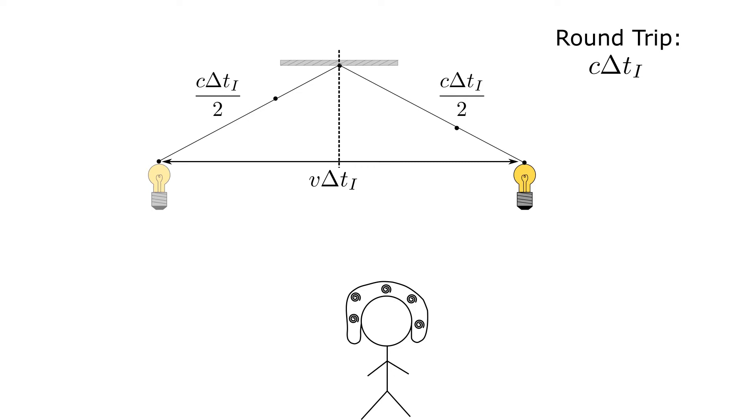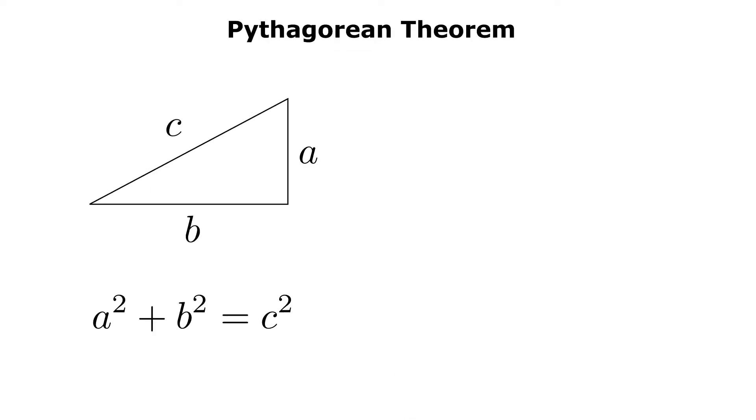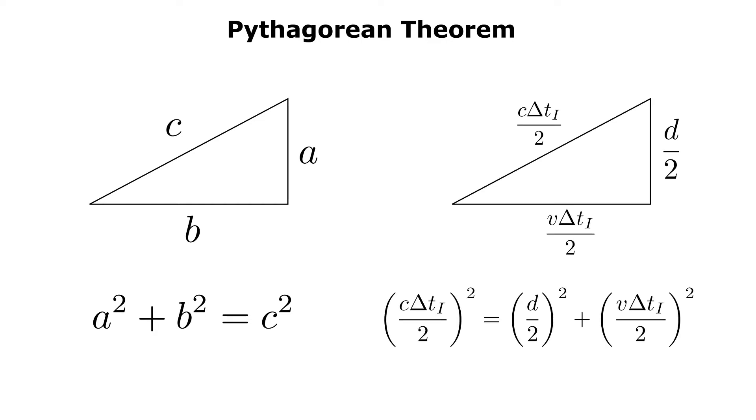Then we can relate the two legs of the triangle to the hypotenuse through the Pythagorean theorem, which gives c delta t i over 2 squared is equal to d over 2 squared plus v delta t i over 2 squared.